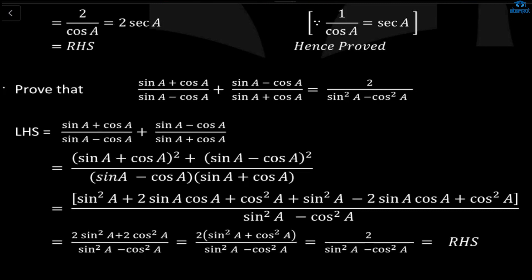The approach totally depends on the question and what you need to prove. You have to think about which identities to bring in, relating what is given to the RHS. This thinking comes from practice. Right now these are easier questions, but at the advanced level in classes 11 and 12, extensive practice is needed. Once you practice enough, proving becomes straightforward.